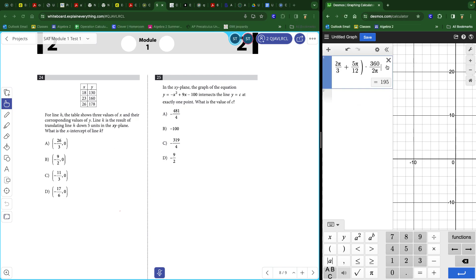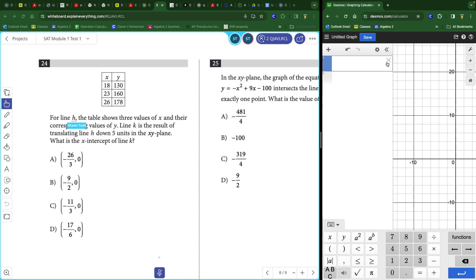24 and 25. So I've got a table here. It says for line h, a table is shown through values of x and therefore it's finding the values of y. So this is h of x. Plug in these x values and outcome these y values right here. Line k is the result of translating h down five units. So k of x is equal to h of x, but translated down five units would be like this, minus five on the outside.